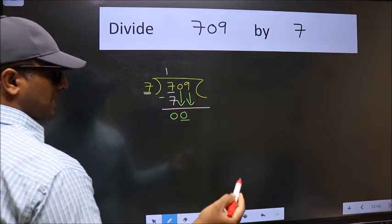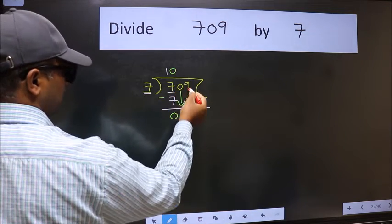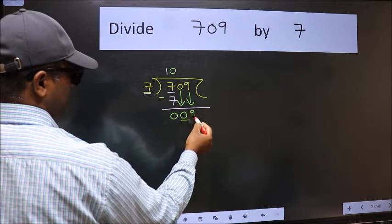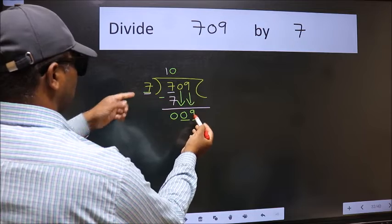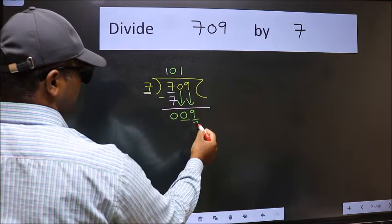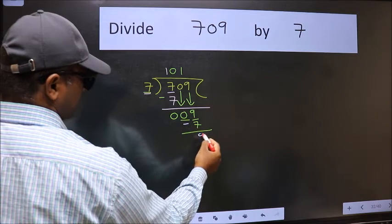The rule for bringing down the second number is we should put 0 here. Then only can we bring this number down. Now 9. A number close to 9 in the 7 table is 7 once 7. Now we subtract and get 2.